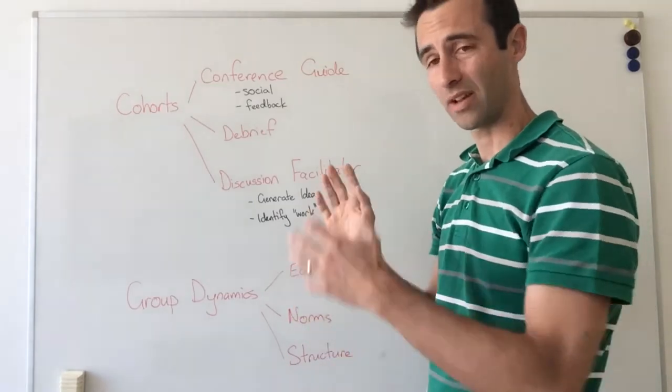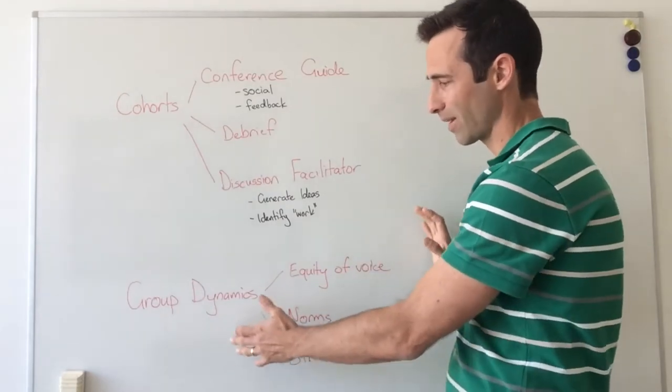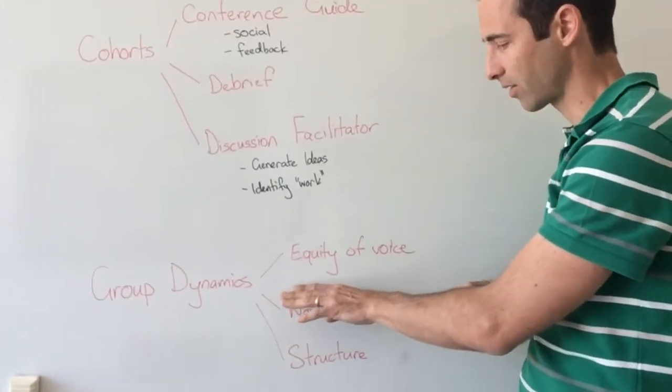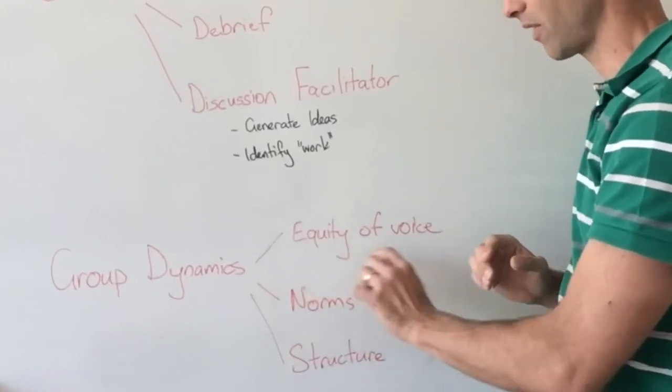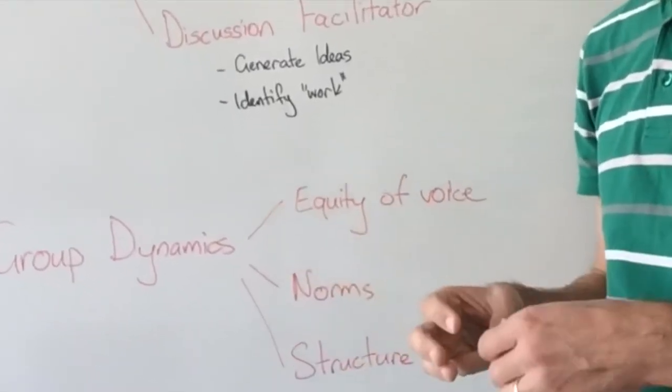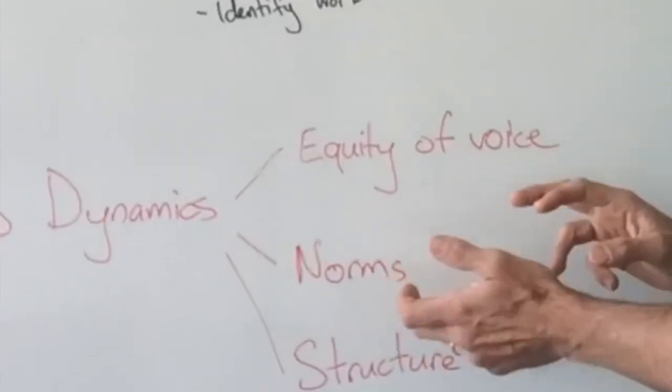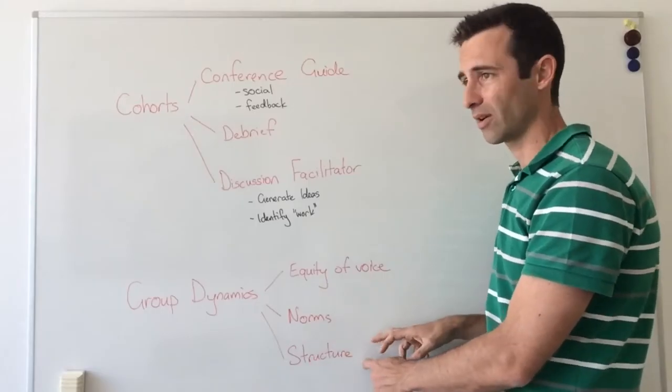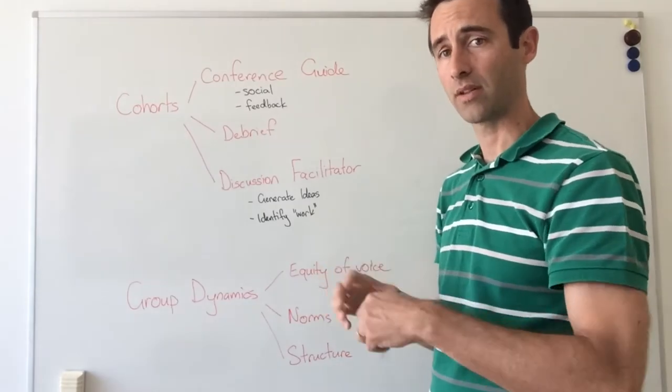On a side note of that sort of split-screen approach to learning, you also have to think about how the group dynamics are working. One of the big things I try and focus on in cohorts is this whole idea of equity of voice, that everyone needs to feel their voice is valued. You can do that by establishing norms of how the conversation is run, and also by providing a little bit of structure to these discussions.